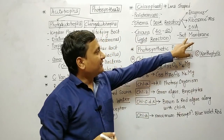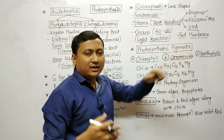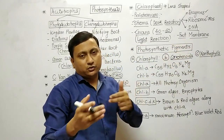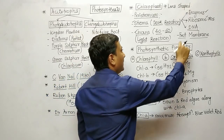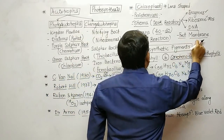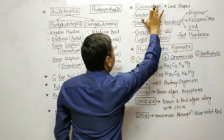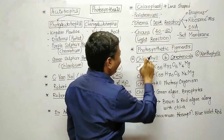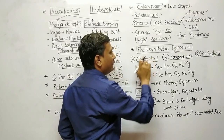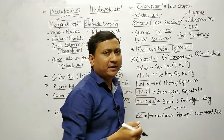The stroma facilitates transport of materials. These are the important points about chloroplasts. The next heading is photosynthetic pigments.